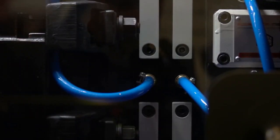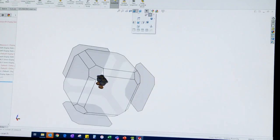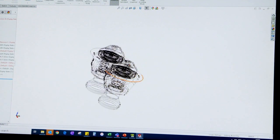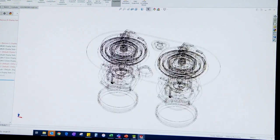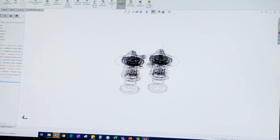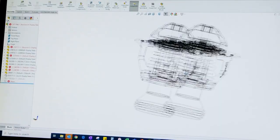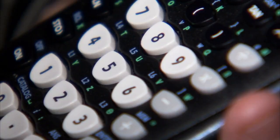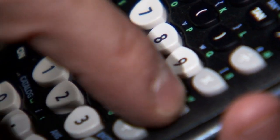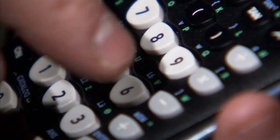For instance, the buttons are created using a combination of injection molding and printing techniques. The button molds are created using advanced CAD software, which allows the designers to create complex shapes and patterns with a high level of precision. The molds are then filled with a specialized plastic material and heated to create the final button shape.